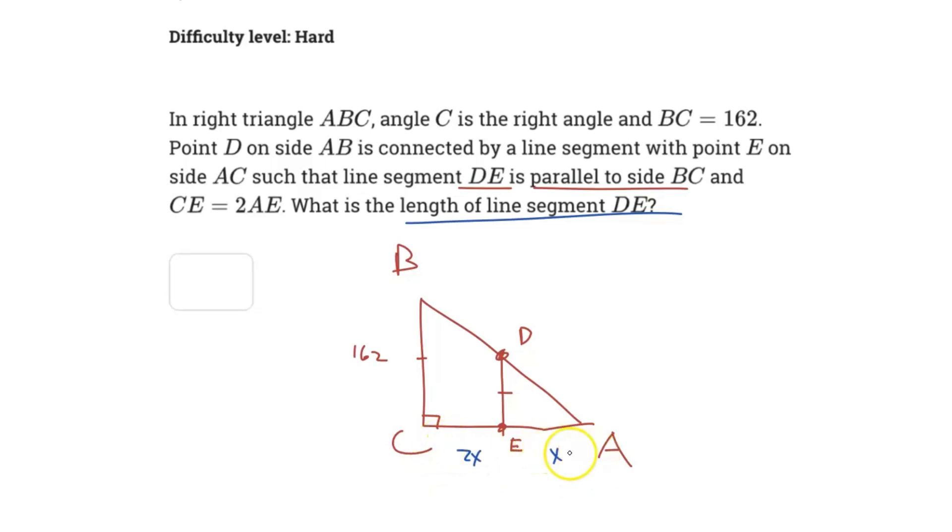Now we don't know the value of AC quite yet, but we can figure it out pretty easily because 2X plus X is going to give us a value of 3X. So we know AC now is just 3X. Now we know that since these two sides correspond with each other, we can just find the difference. So to go from 3X to X, that's a 1/3 scale factor.